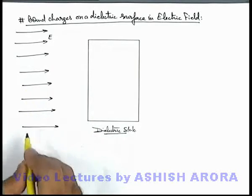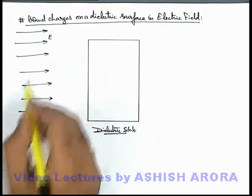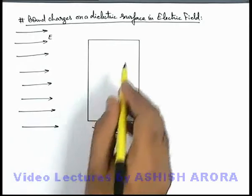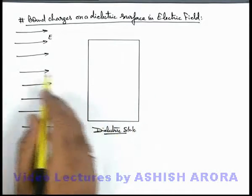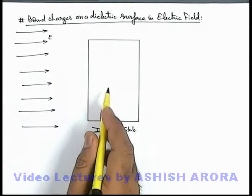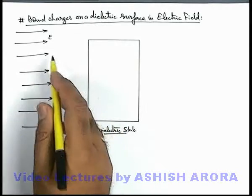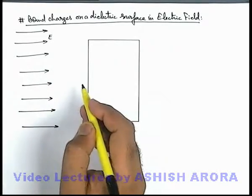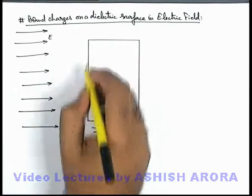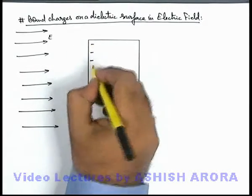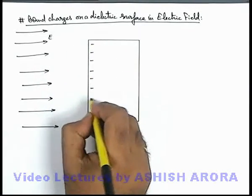In the previous section we have studied that due to application of this electric field, all dipoles will get aligned in the direction of the electric field due to the couple exerted onto this dipole by the electric field. And we can see on the left surface there are some negative charges induced due to the alignment of dipoles.